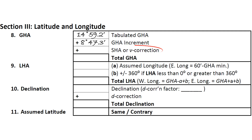SHA refers to star hour angle, used only for stars, while V correction is used for the Moon and planets. These are beyond the scope of this course and do not apply for the Sun, so we note NA on our site reduction form.